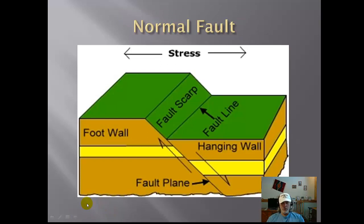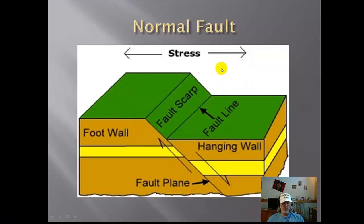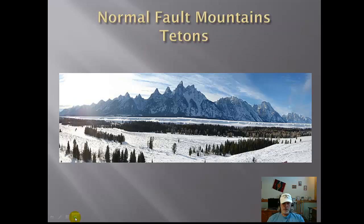Here's the first type of fault: the normal fault. Normal faults are the ones that occur most often. When you look at a normal fault, you're talking about tension stress — you're lengthening the crust. The hanging wall is moving down relative to the foot wall. A good example of these type of mountains are the Teton Mountains in Wyoming, just south of Yellowstone National Park. For my money, probably the most beautiful range in the United States. This area here would be Jackson Hole, with the Snake River flowing through — and these are normal fault mountains.